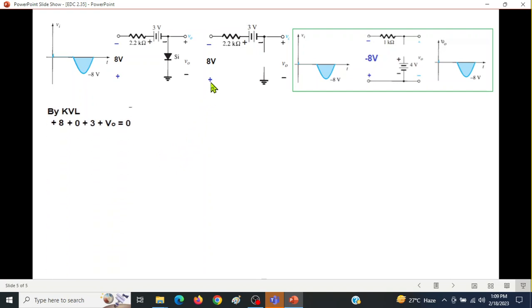So we're starting from here: plus 8, voltage drop in the resistor will be 0 because no current is flowing so we're adding 0 for that, then plus 3, and then plus V0. And from here V0 is negative 11.